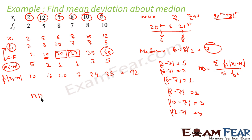So according to the formula, mean deviation is nothing but the same formula I will write: sigma fi into xi minus m divided by sigma fi, where i is equal to 1 to 12.